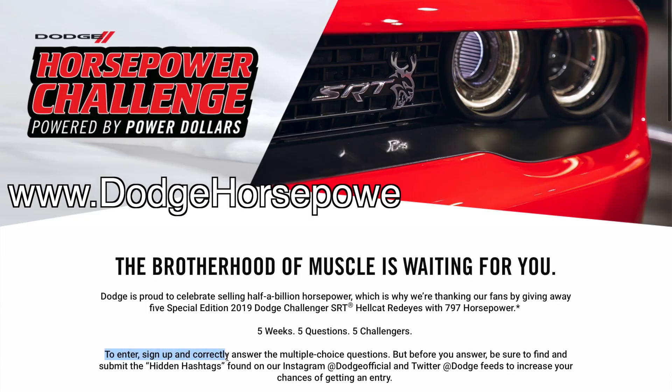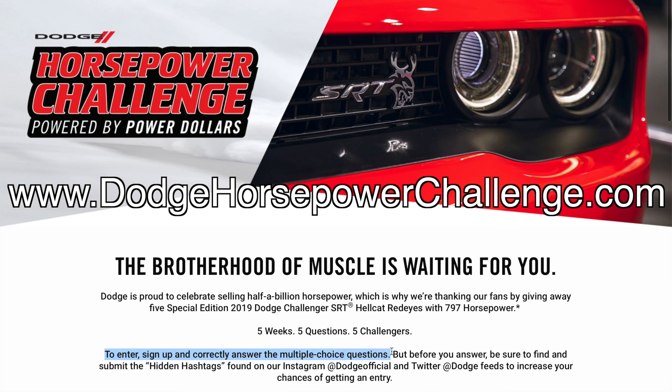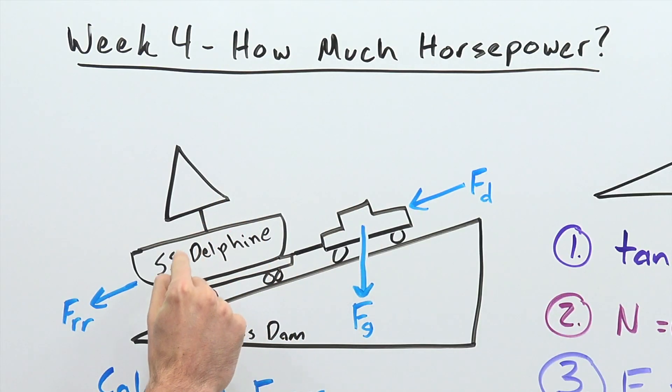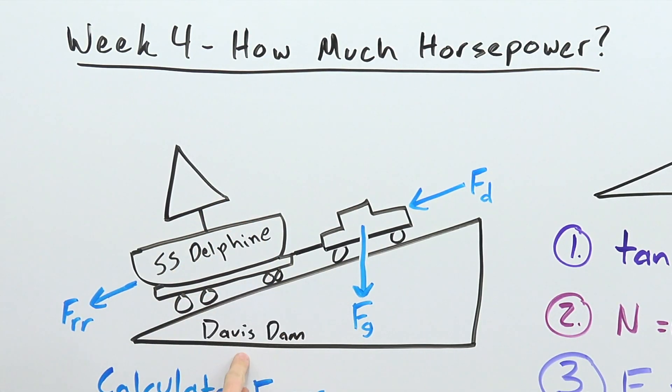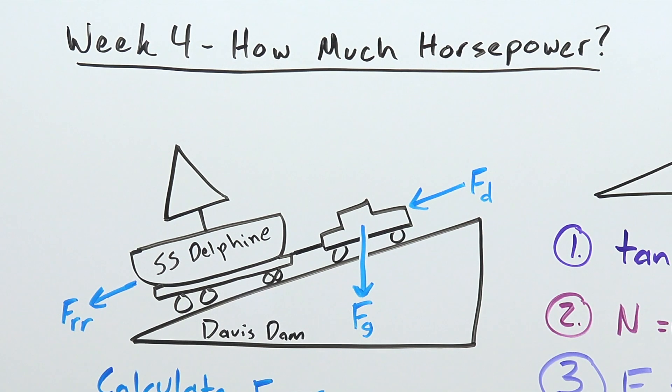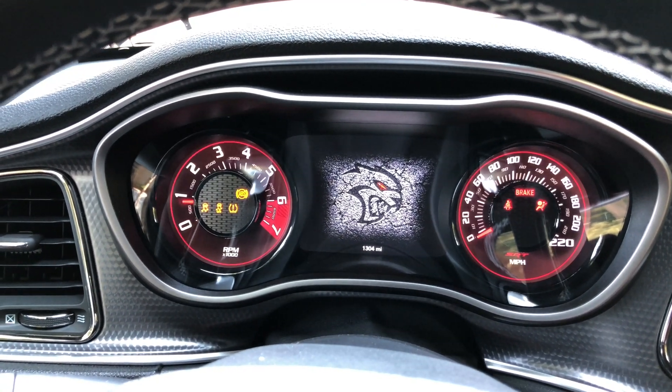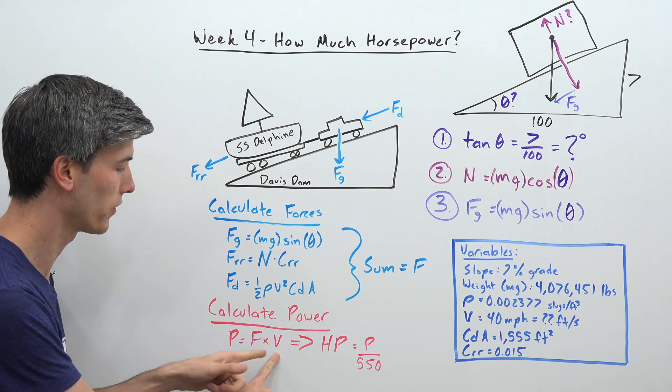To enter go to DodgeHorsepowerChallenge.com and this week's question is: How much horsepower would a Hellcat Red-Eye need in order to tow the SS Delphine up the Davis Dam grade climb? So ultimately we need to calculate power and power is a function of force multiplied by velocity.